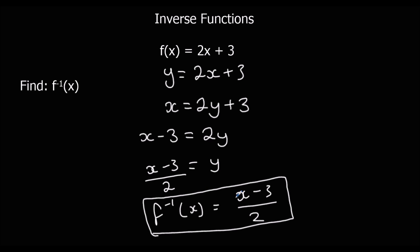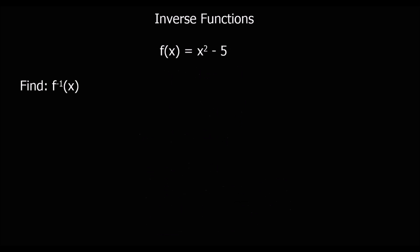So we just switch the x's and y's around, and then make y the subject of the formula. Here's another example. We're going to write it as y equals x squared minus 5 first, and then switch x and y, so it becomes x equals y squared minus 5.